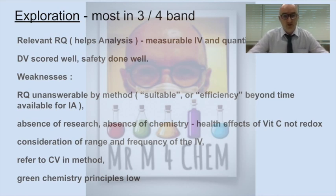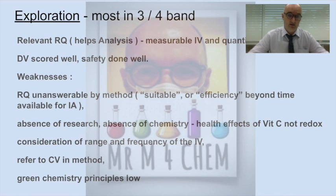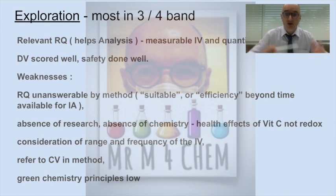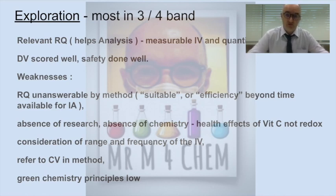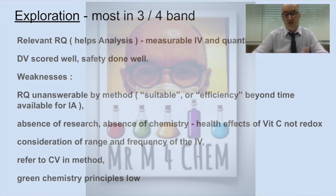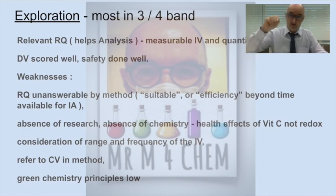An absence of research and an absence of chemistry — we want to see chemical reactions, formulae, the application of formulae, correct mathematical calculations in the IA. All too often we see pages and pages of discussion with no chemistry. You should consider the range and frequency of your independent variable. Before you even go into your method, have a paragraph discussing why your method is how it is — how did you choose that range of your IV? Why did you choose that DV? How did you include or not include some of the control variables? That's wonderful for exploration and personal engagement. That's top bands — that's where you want to be.